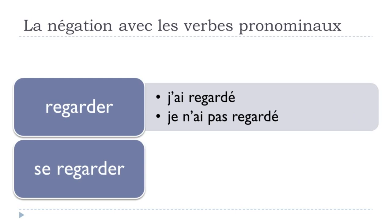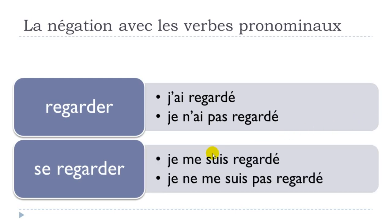With SE REGARDER at the passé composé, you get JE ME SUIS REGARDÉ. For the negative form, you put NE first, then keep ME SUIS together, then PAS, then REGARDÉ. So: JE NE ME SUIS PAS REGARDÉ.